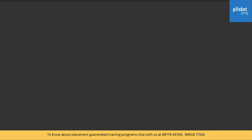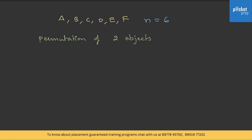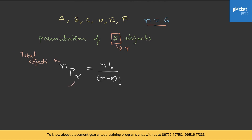Now, what if instead of n objects we are asked to take only a few? Suppose we have A, B, C, D, E, F — that is, n = 6 objects — and the question says we need to do the arrangement of only 2. This number of selected objects can be taken as variable r. So when we have n objects and out of that we select r, the permutation will be nPr, which is n factorial divided by (n − r) factorial, where n is the total number of objects and r is the number selected.